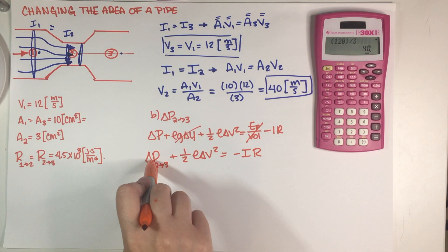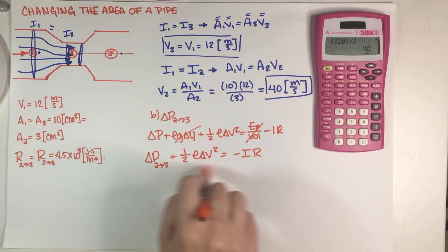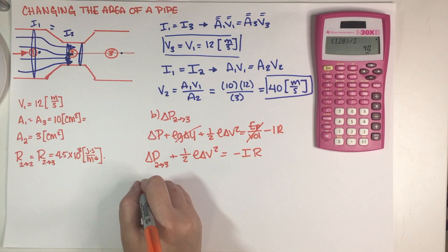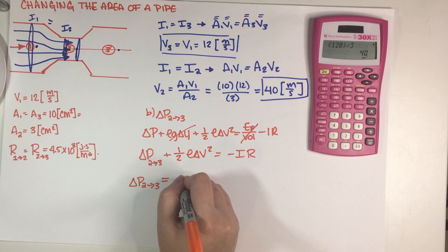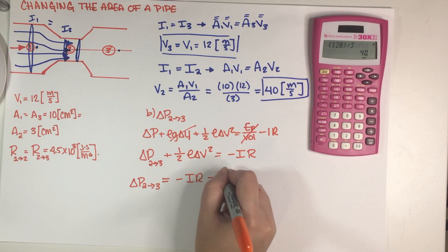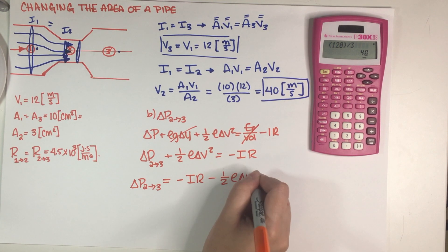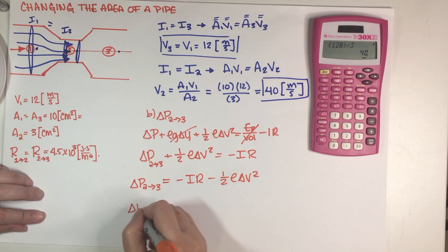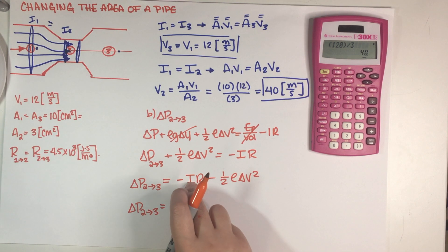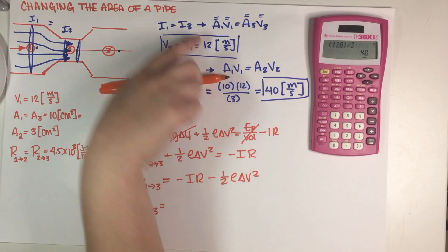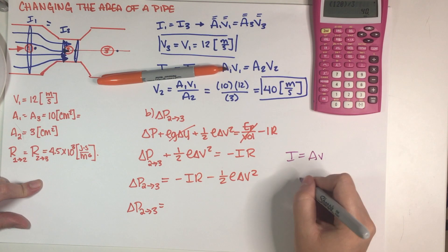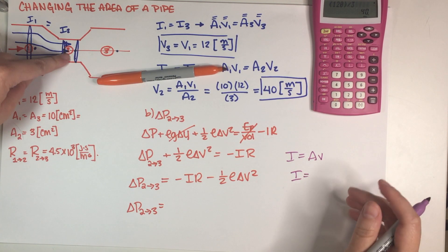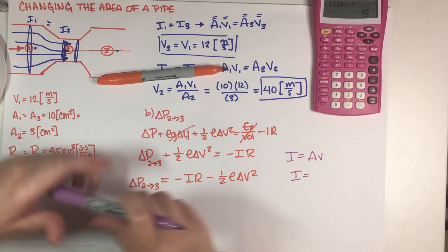So this is what we want to find, so let's just go ahead and push this to the other side of the equation. So this is negative IR negative one half rho del V squared. So let's just start putting some numbers here. I is the flow rate, so how we get the flow rate is just basically by definition. So the definition of flow rate is just I is equal to AB.